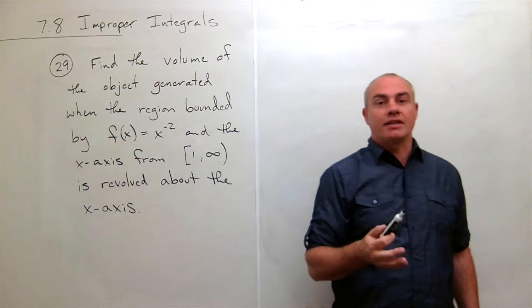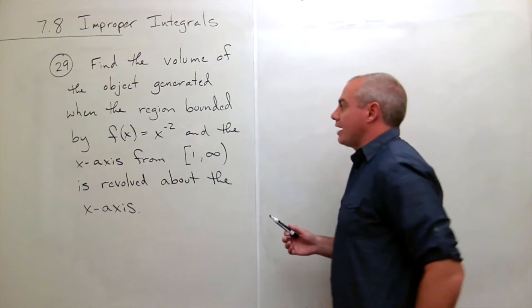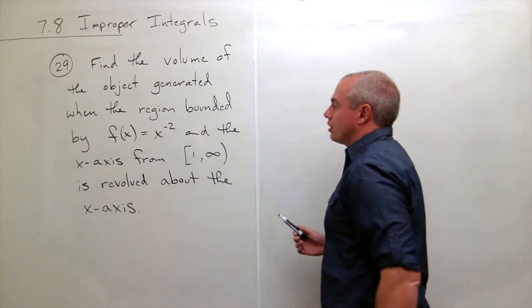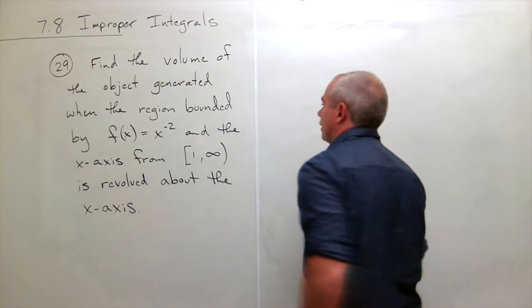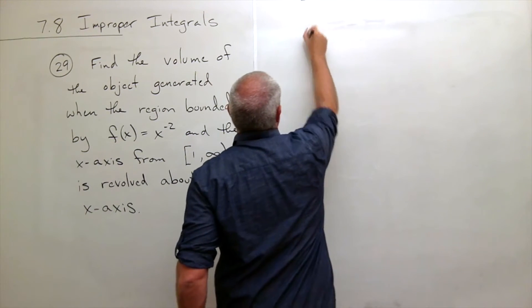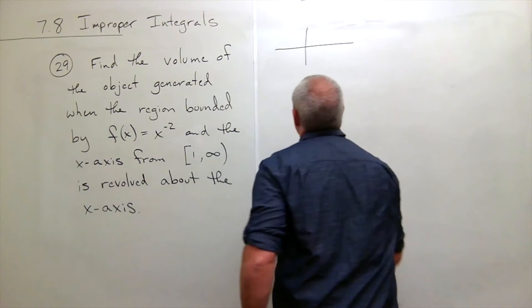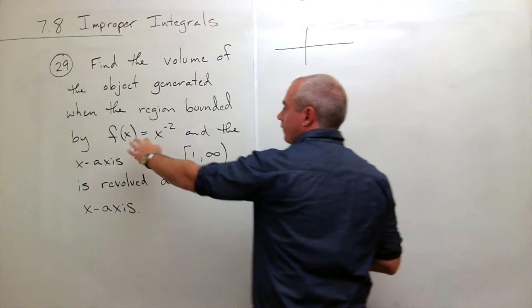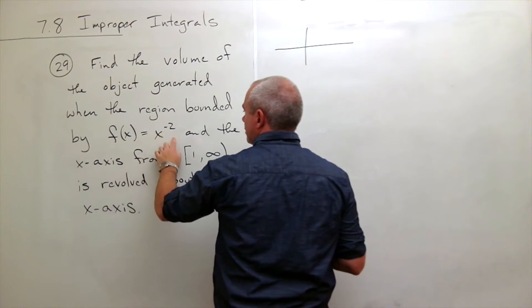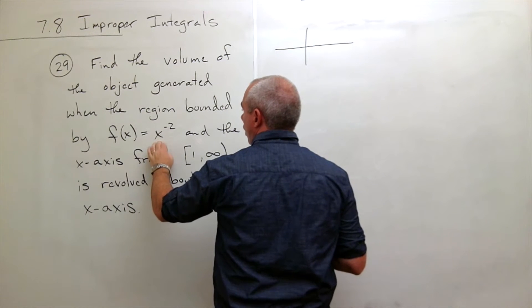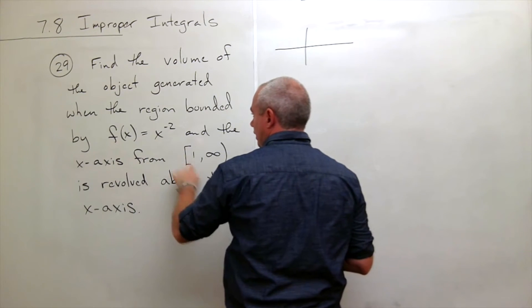So the first thing I'd like to do here is let's start by just drawing a picture and getting a feel for what we're doing here. So here's my x-y-axis, and f of x equals x to the minus 2, well if x is 1, which is an important point here,